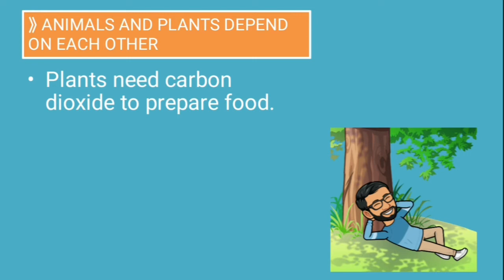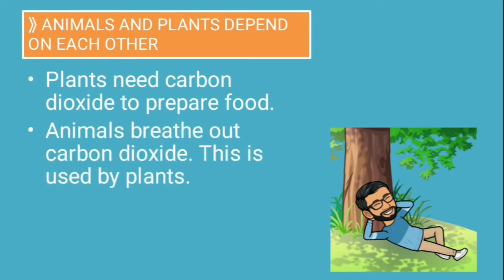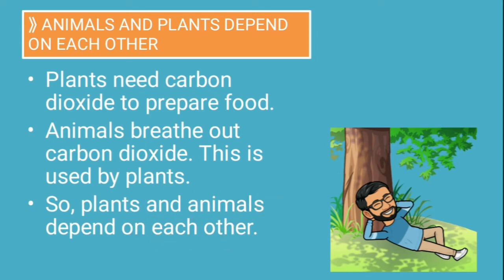Plants need carbon dioxide to prepare food. And from where do they get carbon dioxide? Animals breathe out carbon dioxide. We humans breathe out carbon dioxide. So this is used by plants. So plants and animals depend on each other in that sense. That's why I said that animals and plants are interdependent.